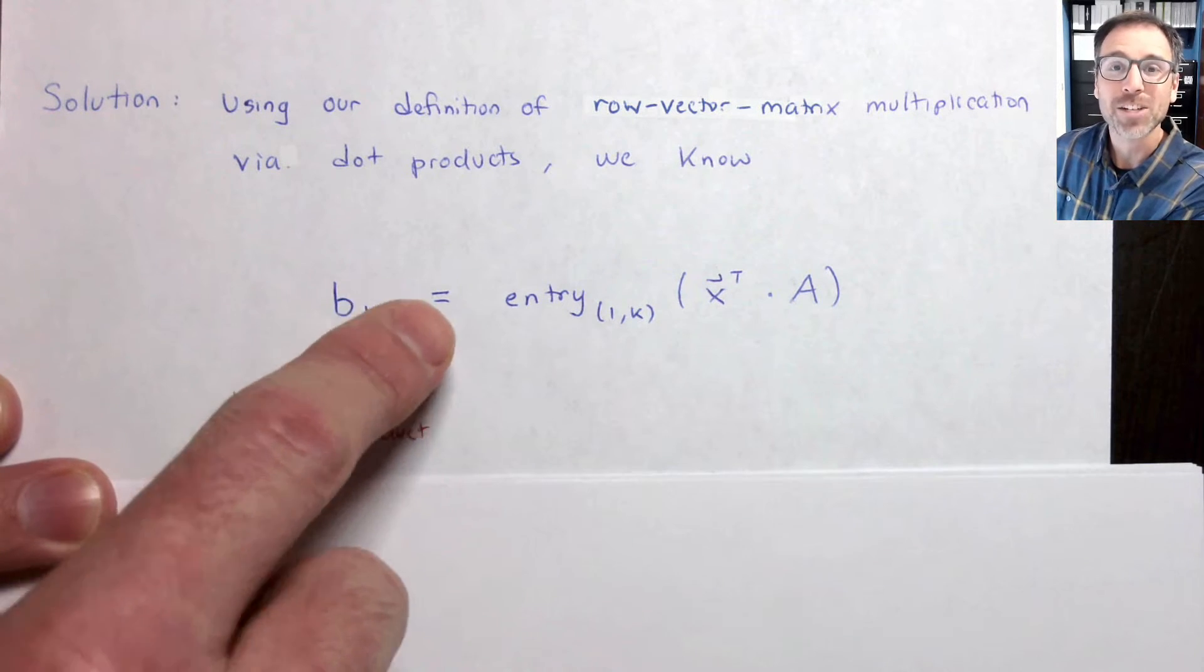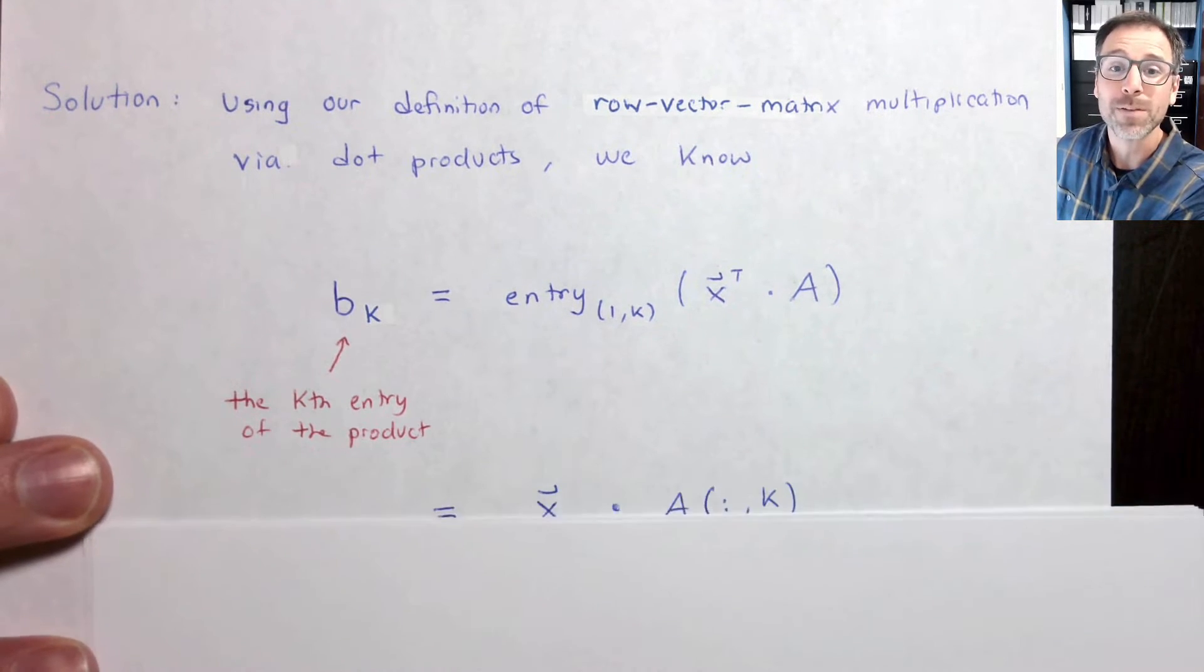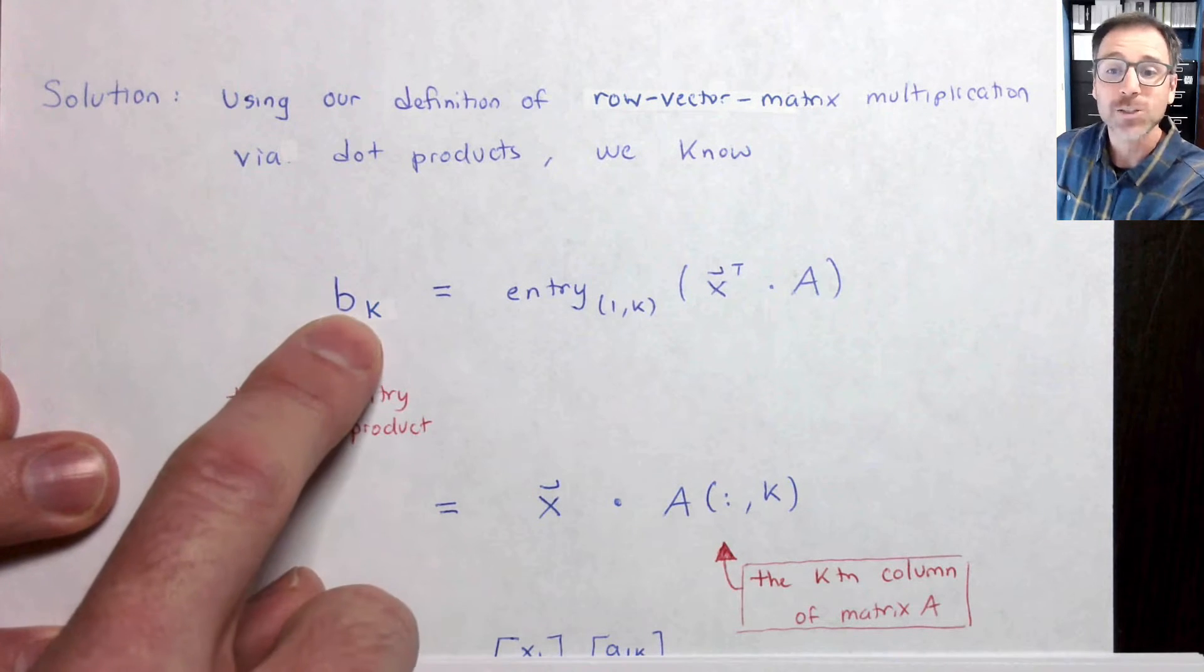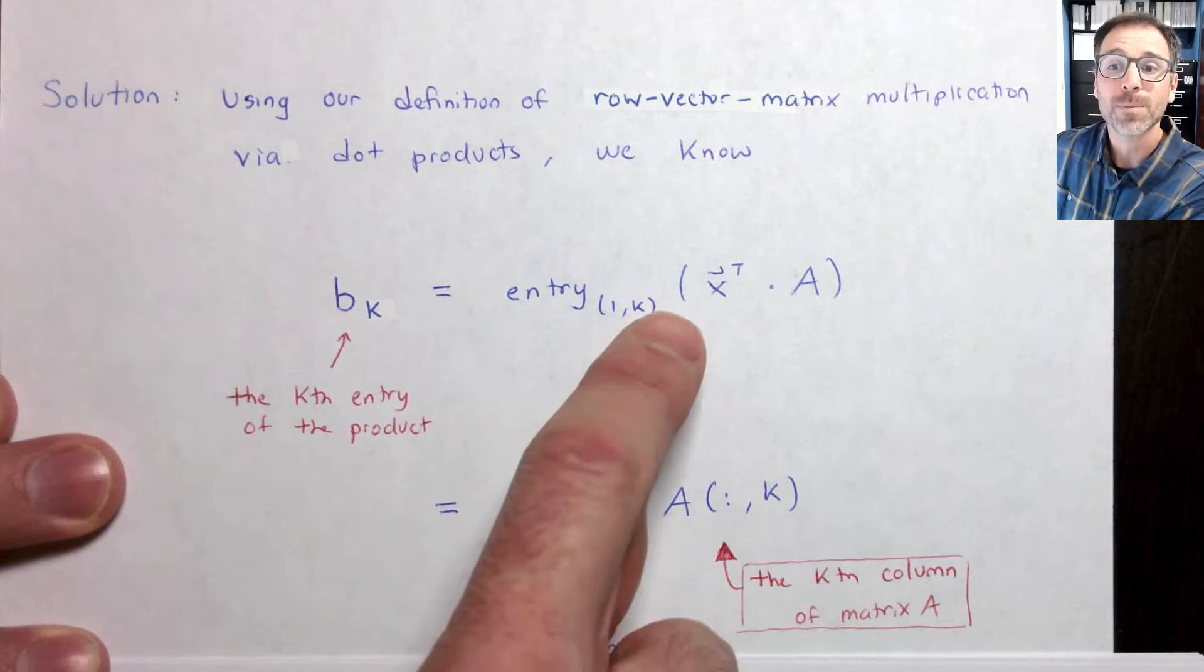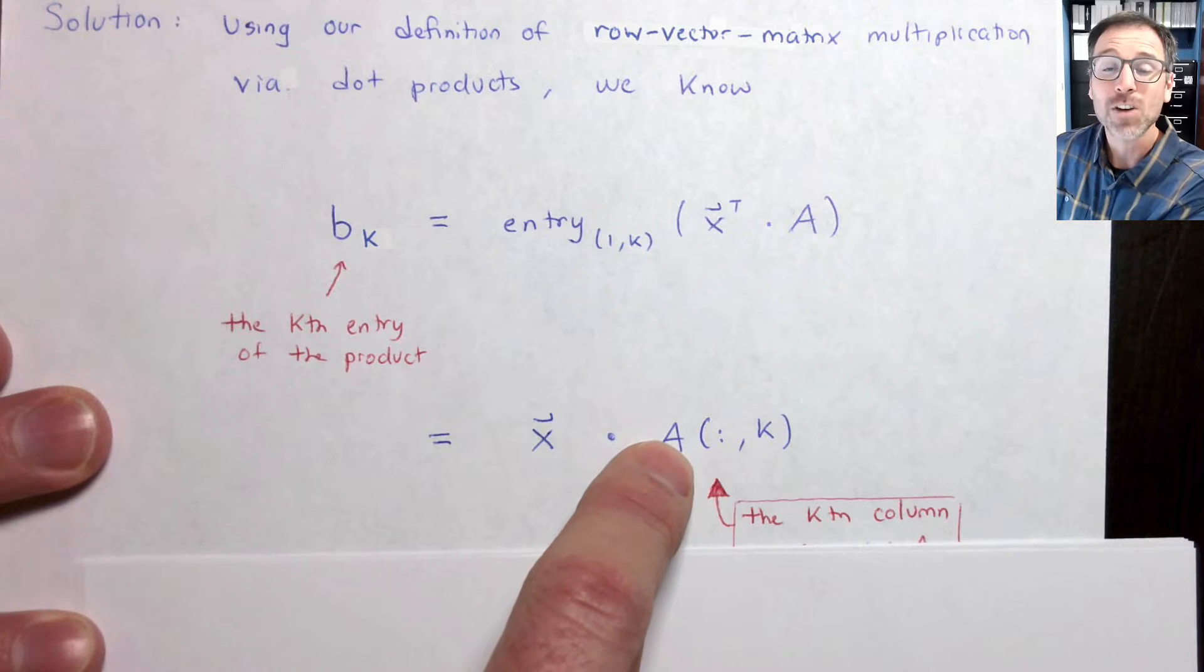Now that I've taken my guess, I'm actually going to confirm my guess by looking at a previous definition, the kth entry of the product is going to be the dot product between the vector x and the kth column of A.